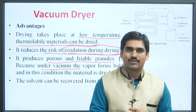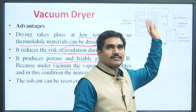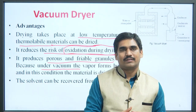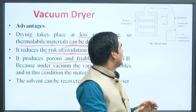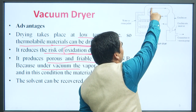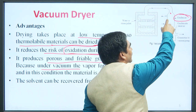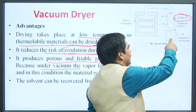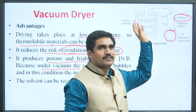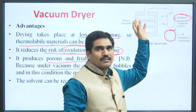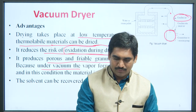One of the most important advantages: the liquid or solvent evaporating in the vacuum dryer can be recovered from the condenser, because after drying, the liquid passes through the tube and reaches the condenser. With the help of this condenser, the liquid gets condensed and is collected into the receiver. So the solvent used in the sample can also be recovered by using this vacuum dryer.